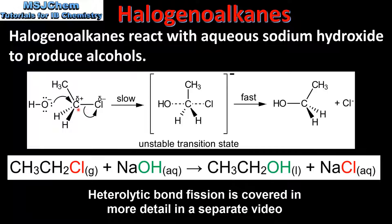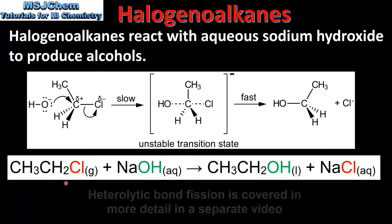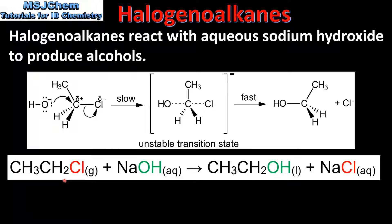In the reaction, the carbon to chlorine bond is broken with the chlorine atom taking both the bonding electrons. This is known as heterolytic bond fission. This produces the chloride ion, which is known as the leaving group. The equation shows that chloroethane reacts with aqueous sodium hydroxide to produce ethanol and sodium chloride.